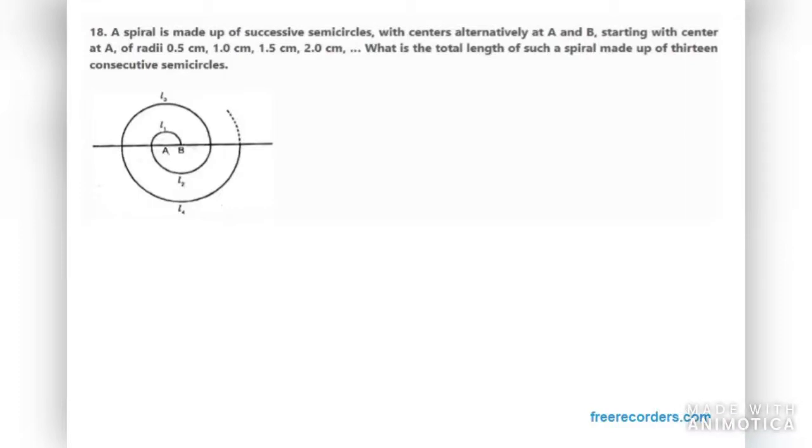Let's start with question number 18 of exercise 5.3. It says a spiral is made up of successive semicircles with centers alternatively at A and B, starting with center at A of radii 0.5 centimeter, 1 centimeter, and so on. What is the total length of such a spiral made up of 13 consecutive semicircles?